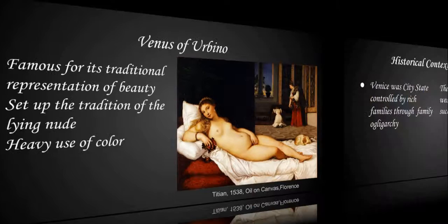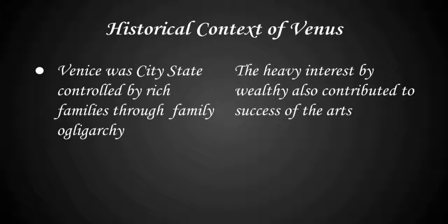The historical context of Venus is that Venice was a city-state controlled by families in an oligarchy. This is important because the painting itself was sponsored by rich aristocrats, and this heavy interest by the wealthy also contributed to the flourishing of the arts.